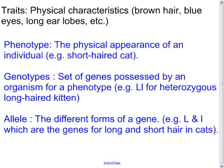An allele is the name we give for the different forms of a gene, so capital L and lowercase l, which could be the genes for long and short hair in cats. So traits are physical characteristics, phenotype is the physical appearance of an individual, genotype is the set of genes for an individual, and allele is the different forms of the gene.